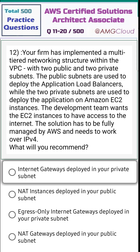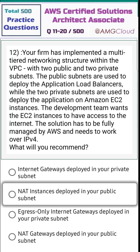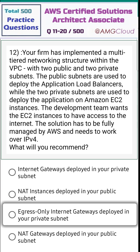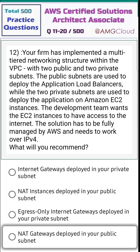First option: internet gateways deployed in your private subnet. Second option: NAT instances deployed in your public subnet. Option three: egress-only internet gateways deployed in your private subnet. Fourth option: NAT gateways deployed in your public subnet.